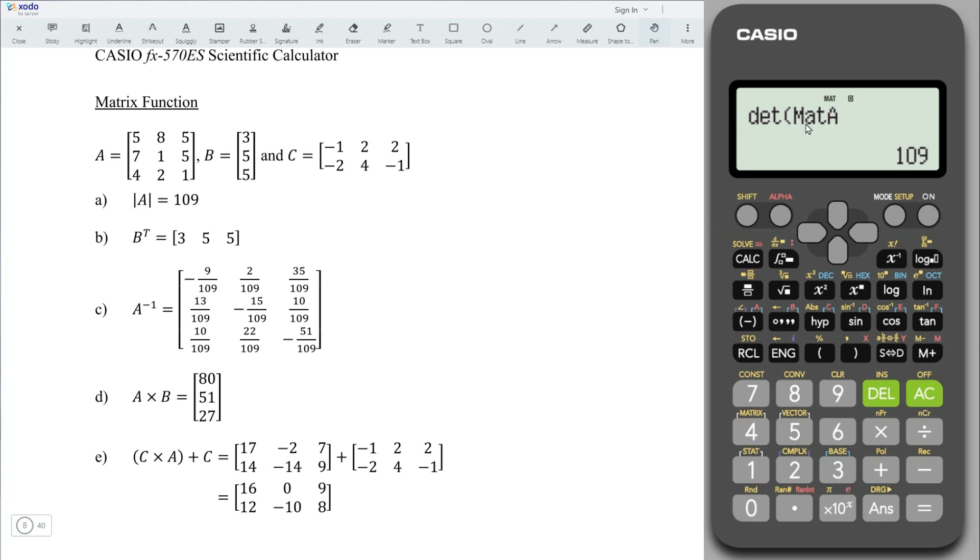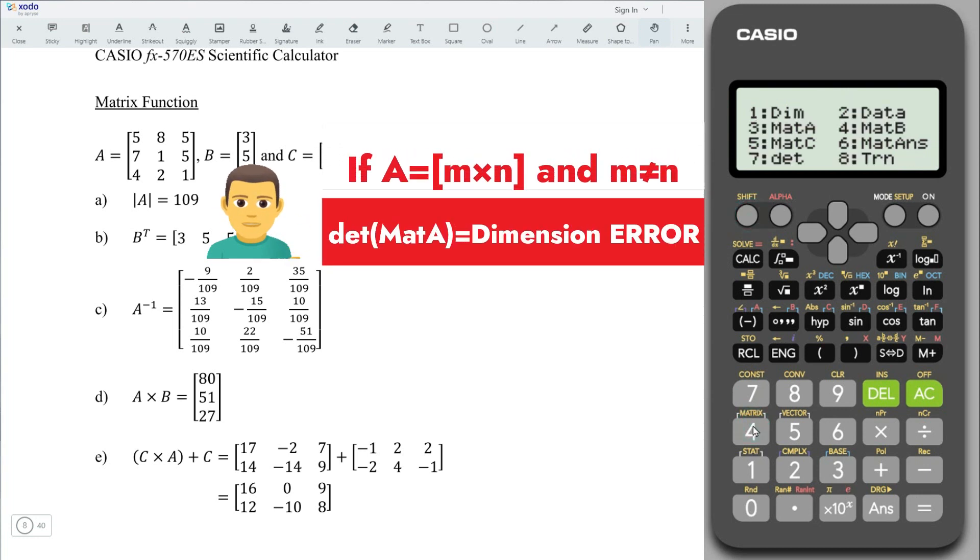We should take note that in order to obtain the determinant, this matrix must be a square matrix. Which means that if we determine the determinant for any matrix that is not square matrix, for example, the matrix B. When we press on equal, we will obtain dimension error.